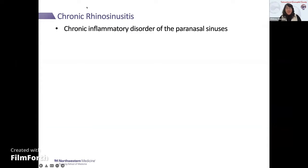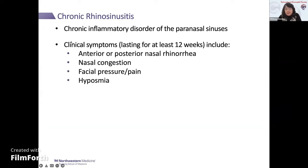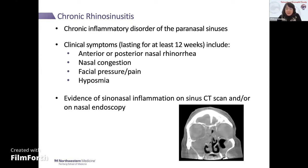For those of you who don't think about chronic rhinosinusitis on a daily basis, it's a disease characterized by chronic inflammation of the paranasal sinuses. Clinically, patients need to have for at least 12 weeks symptoms including a runny nose, post-nasal drip, nasal congestion, facial pressure, pain, and reduced or even absent sense of smell. Additionally, you need objective evidence of sinonasal inflammation, which can be observed on a sinus CT scan showing opacification of the sinuses, and also by nasal endoscopy.